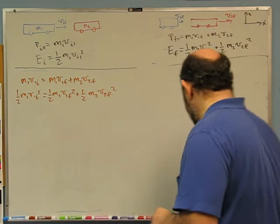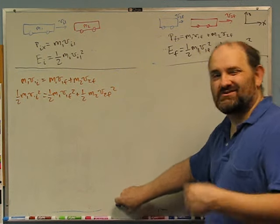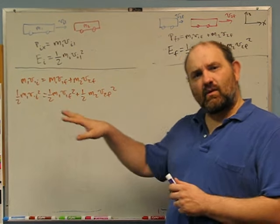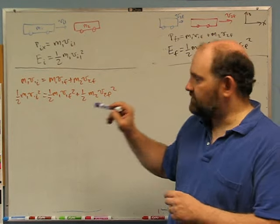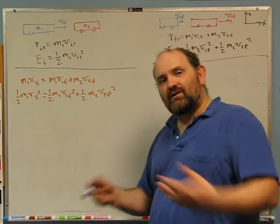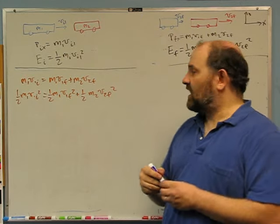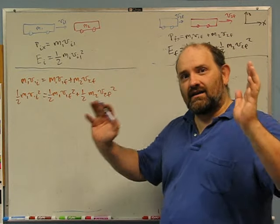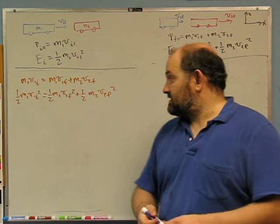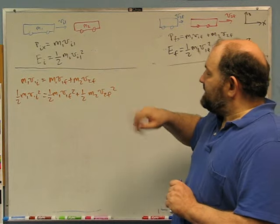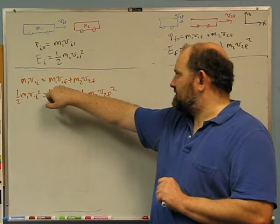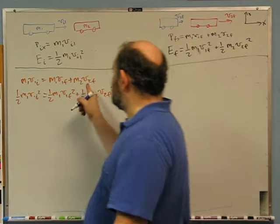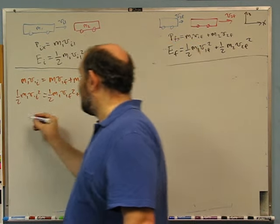There's actually an easier way to do the algebra — if you make a slightly different choice early on. Instead of finding V1F first, let's find V2F first. To do that, I'll get V1F from the momentum equation and substitute into the energy equation. So V1F = (M1*V1I - M2*V2F) / M1. I'll multiply the energy equation by two to clear the one-halves.